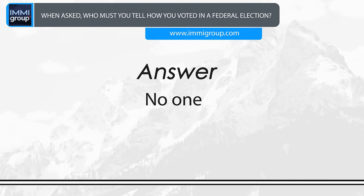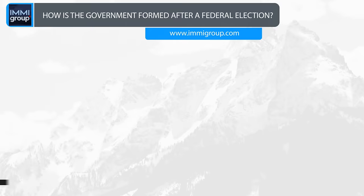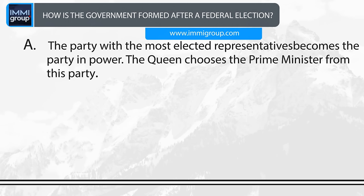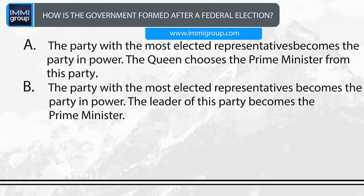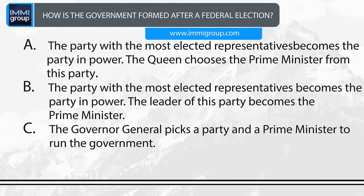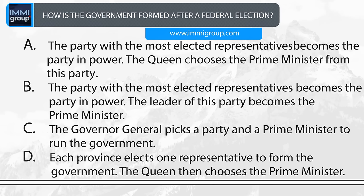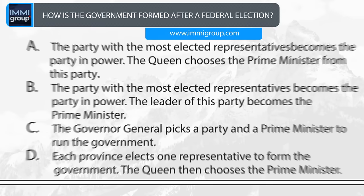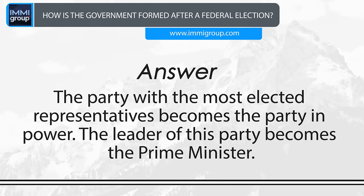How is the government formed after a federal election? A. The party with the most elected representatives becomes the party in power; the Queen chooses the Prime Minister from this party. B. The party with the most elected representatives becomes the party in power; the leader of this party becomes the Prime Minister. C. The Governor General picks a party and a Prime Minister to run the government. D. Each province elects one representative to form the government; the Queen then chooses the Prime Minister. Answer: The party with the most elected representatives becomes the party in power; the leader of this party becomes the Prime Minister.